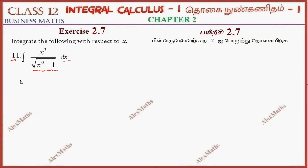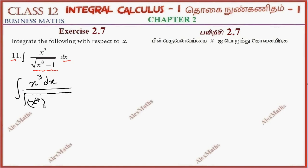We can rearrange the numerator as it is. The denominator is something whole square — x⁸ is x⁴ whole square. So we let z equal to x⁴, and dz is equal to 4x³ dx.